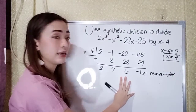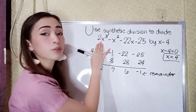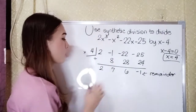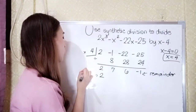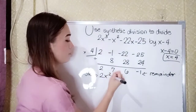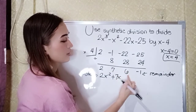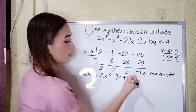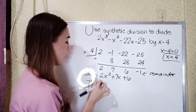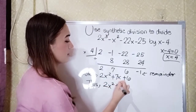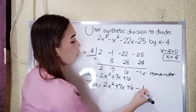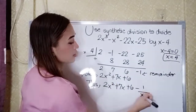How to write this as an equation? Since the highest exponent is x cubed, our quotient uses x squared. So our quotient is 2x squared plus 7x plus 6. Our full equation is 2x squared plus 7x plus 6, with remainder negative 1 over x minus 4.